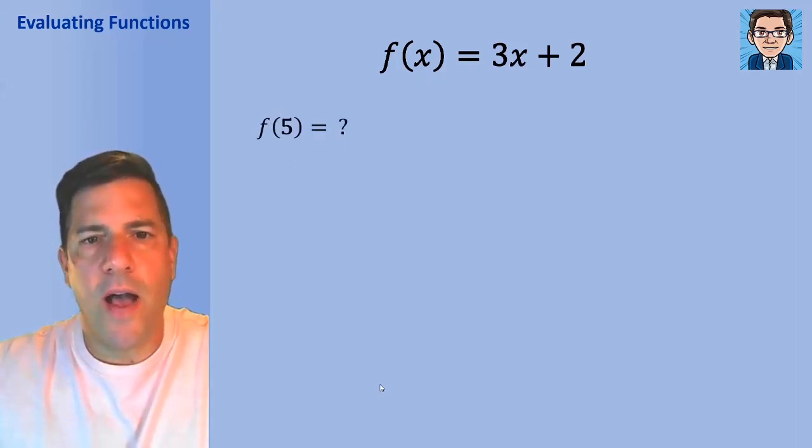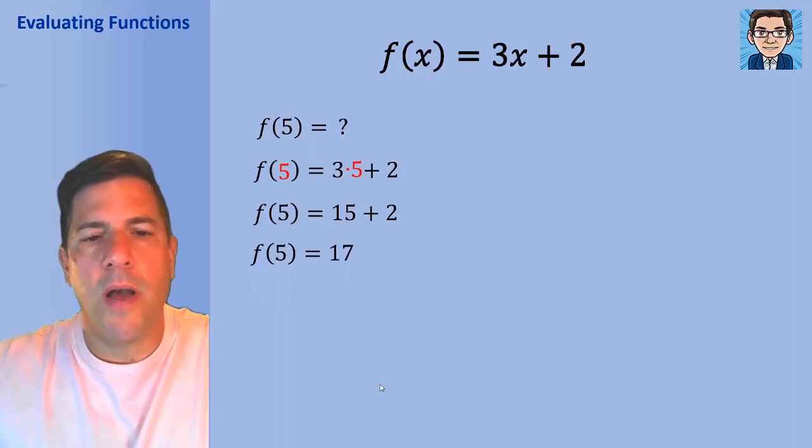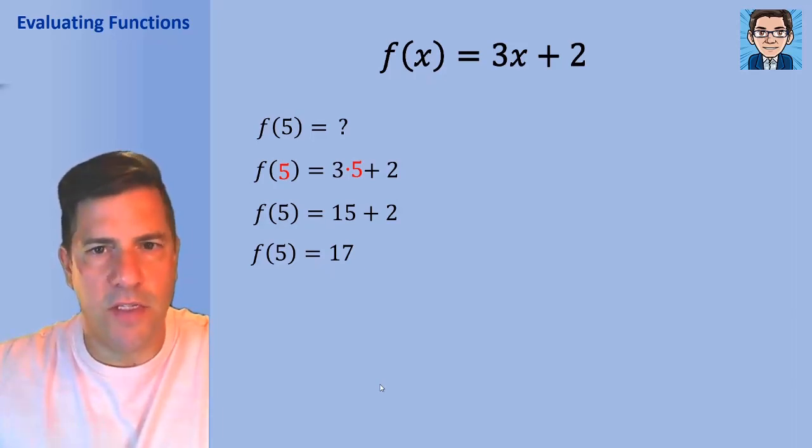We're going to take f of 5 and evaluate that. We would take our function and put 5 into it. So f of 5 becomes 3 times 5 plus 2, which is 15 plus 2. Combine those terms and we get f of 5 equals 17. When we write it like that, it shows us what we put into the function, the 5, and what we get out, which is 17.